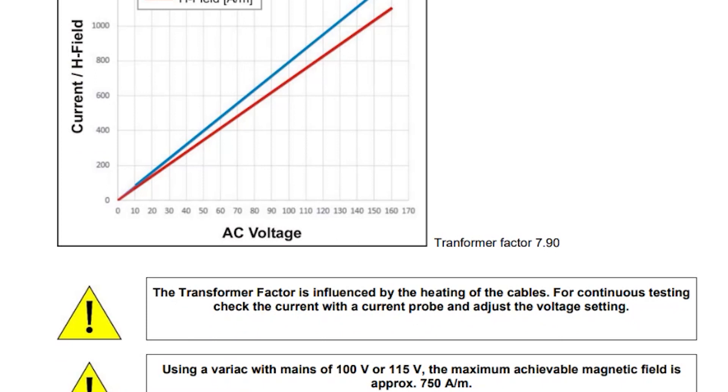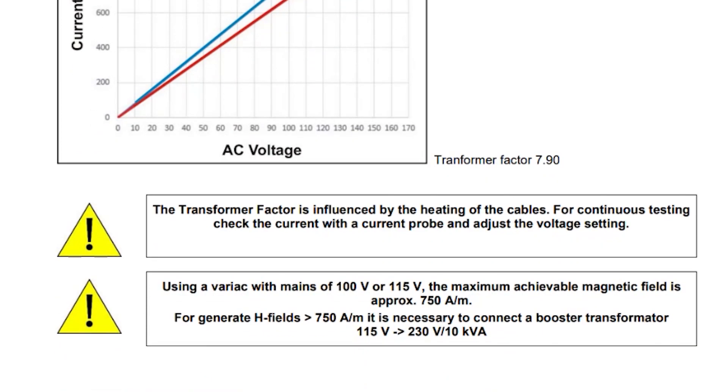Taking a look just below that we have a couple notes. As the notes indicate, to achieve greater than 750 amps per meter it is necessary to have a voltage source greater than 115 volts. This is illustrated on the graph as well, however it is certainly something you want to be aware of.